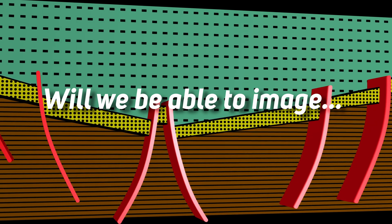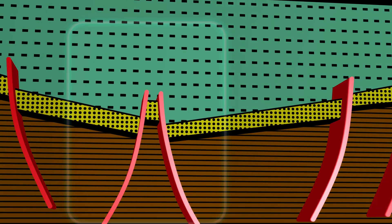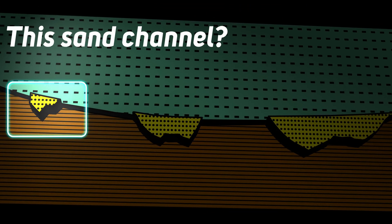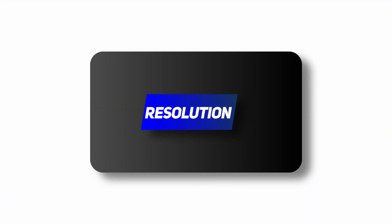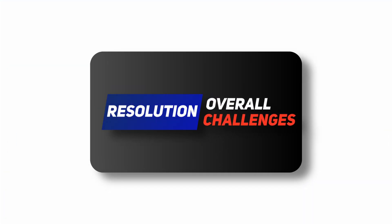Lateral resolution of the seismic survey is determined by the geometry of the survey, including the spacing between the seismic source and receivers, as well as the frequency content of the seismic waves. When conducting a seismic survey, many factors can affect the overall resolution of the image we gather.